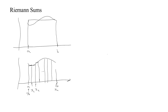We'd usually call the left endpoint x0. So we get what we call a partition, which is just a set of points: the far left endpoint, the endpoint of the next sub-interval, the endpoint of the next sub-interval, and so on to the last endpoint. So we create this partition.